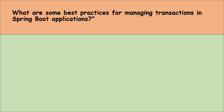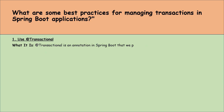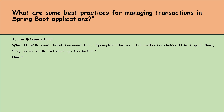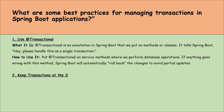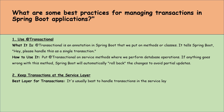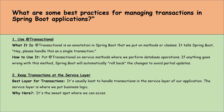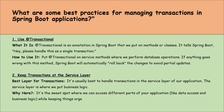What are some best practices for managing transactions in a Spring Boot application? First, use the @Transactional annotation — it is placed on a method or class and tells Spring Boot to handle it as a single transaction. Put the @Transactional annotation on service methods where database operations are performed. If anything goes wrong, Spring Boot will automatically roll back the changes to avoid partial updates. Second, keep transactions at the service layer, which is where business logic lives — it's a sweet spot where we can access both data access and business logic while keeping things organized.